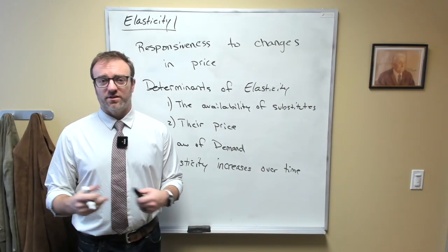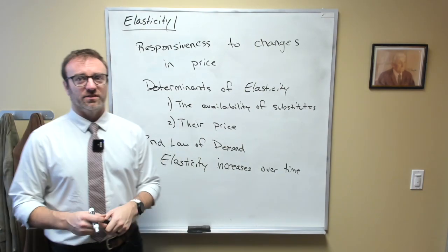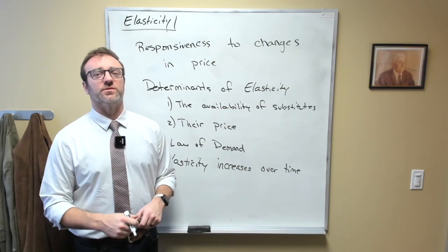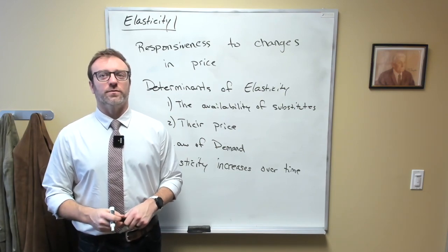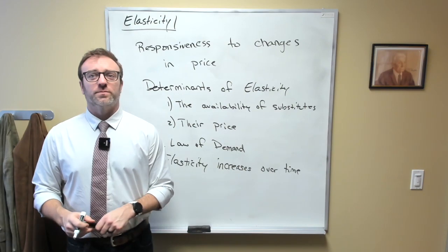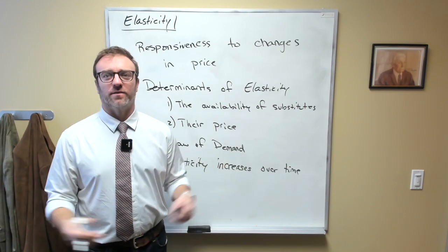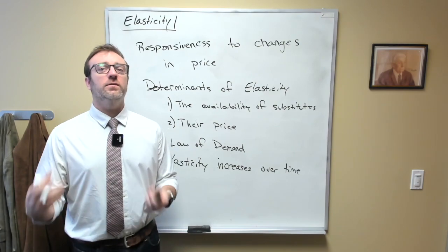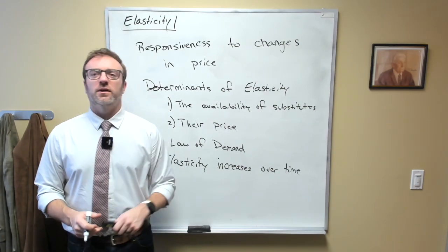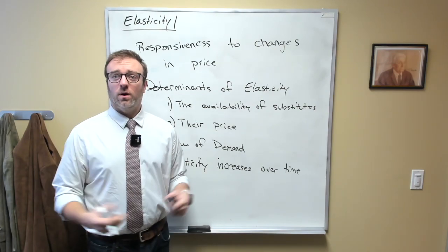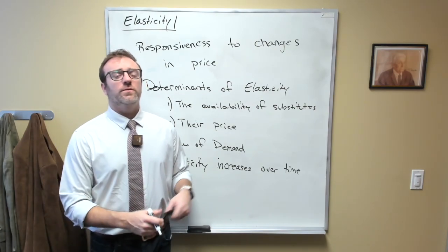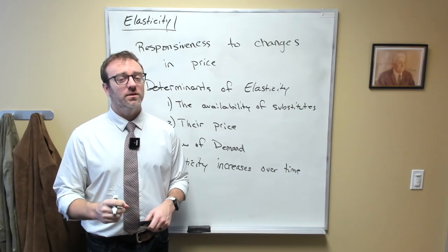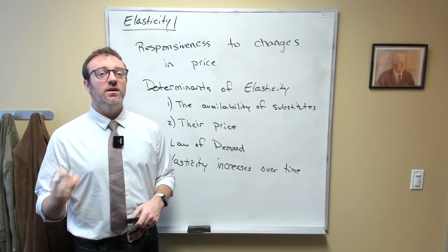Now there are a few other factors that influence elasticity, but they're all related to these. We tend to be more price sensitive to things that account for larger proportions of our income. You will almost certainly shop around for a house or apartment much more than you'll shop around for a pack of gum. We also tend to be much more price sensitive to things that we plan to buy repeatedly compared to things we only buy once. We'll spend much more time researching treatment options and their costs for chronic diseases than for things like a broken bone. The time and effort it takes to find the best deal is important, but we should also remember that this time and effort is costly.